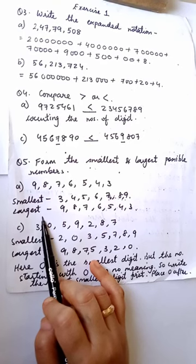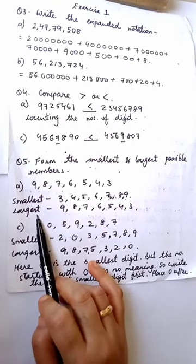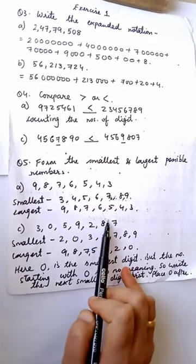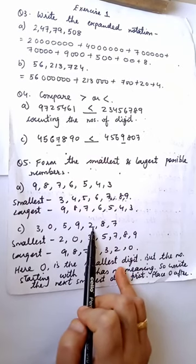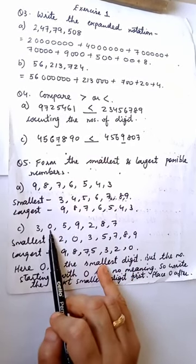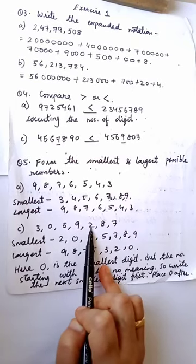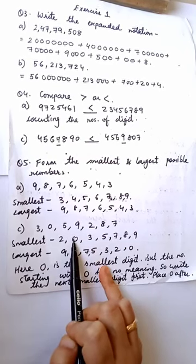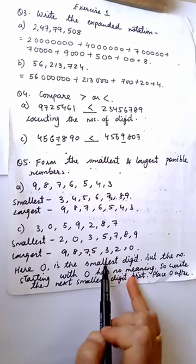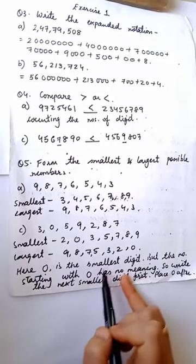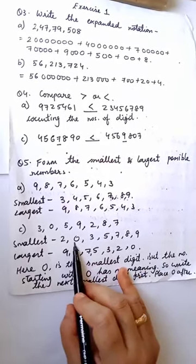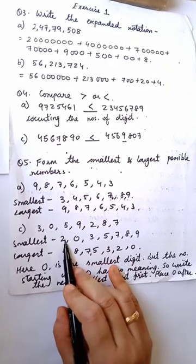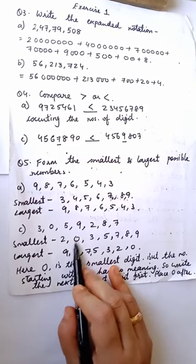Now if I see part C — children, this is a little bit different for you, just pay attention. Your number is 3, 0, 5, 9, 2, 8, 7. First you are going to find the smallest number. Here the smallest digit is 0 and then 2. But children, while writing the number, you are going to write 2 first and then 0. Because 0 is the smallest digit but a number starting with 0 has no meaning. So you are going to write the smallest non-zero digit first and then place the 0 after that number.